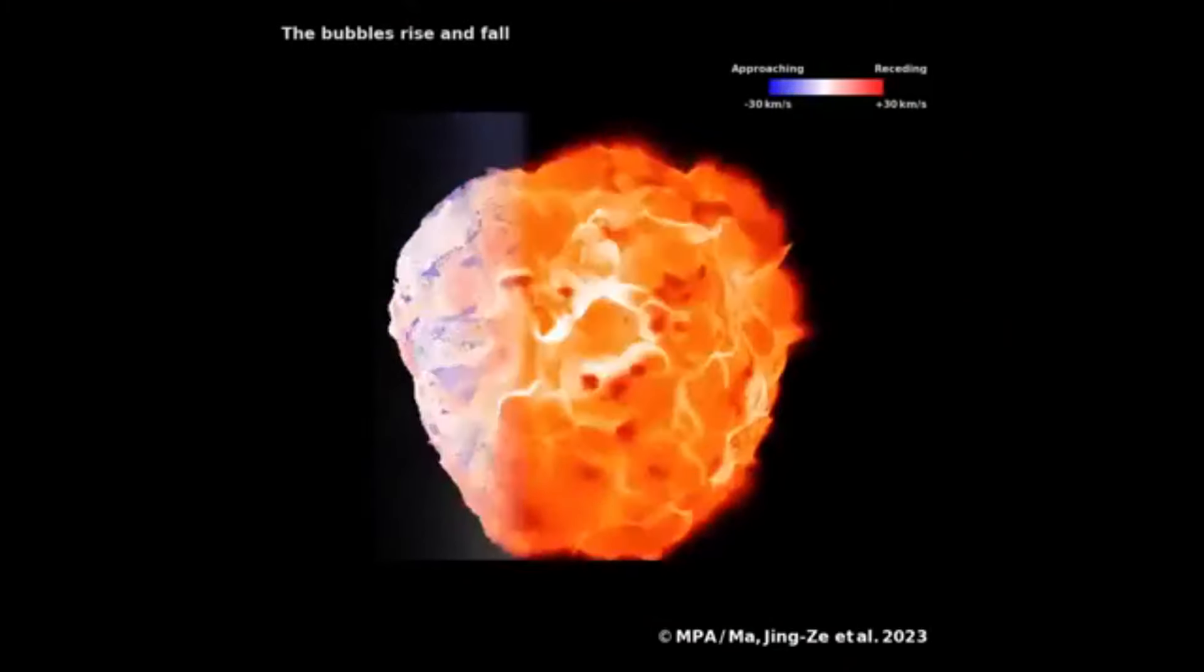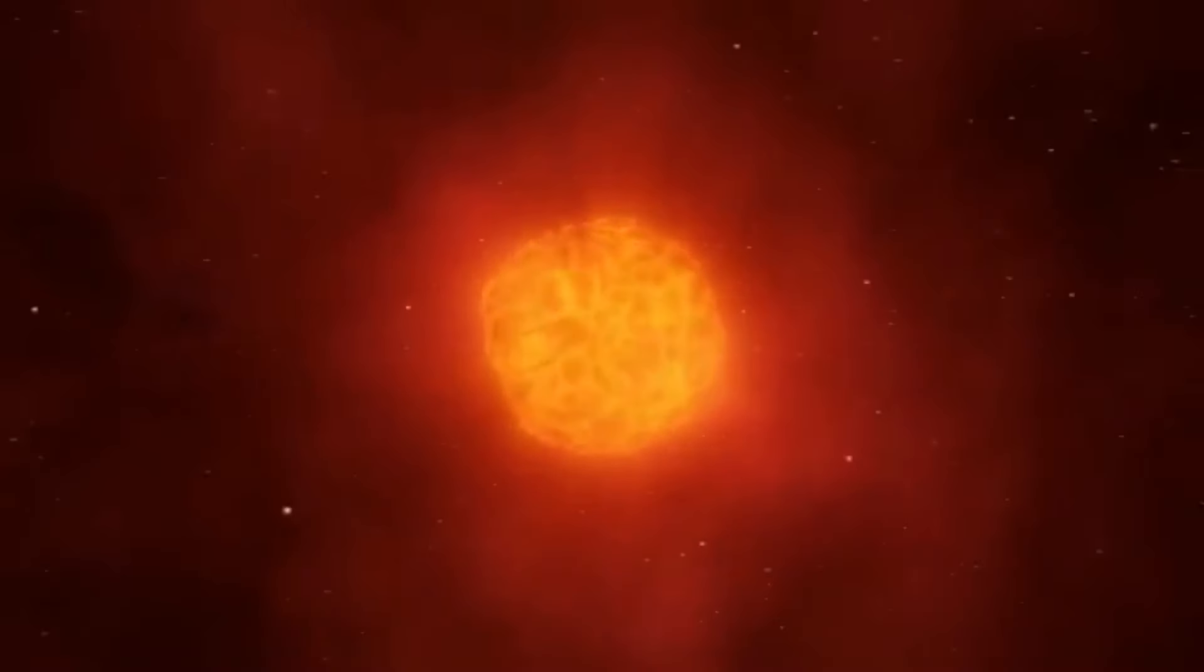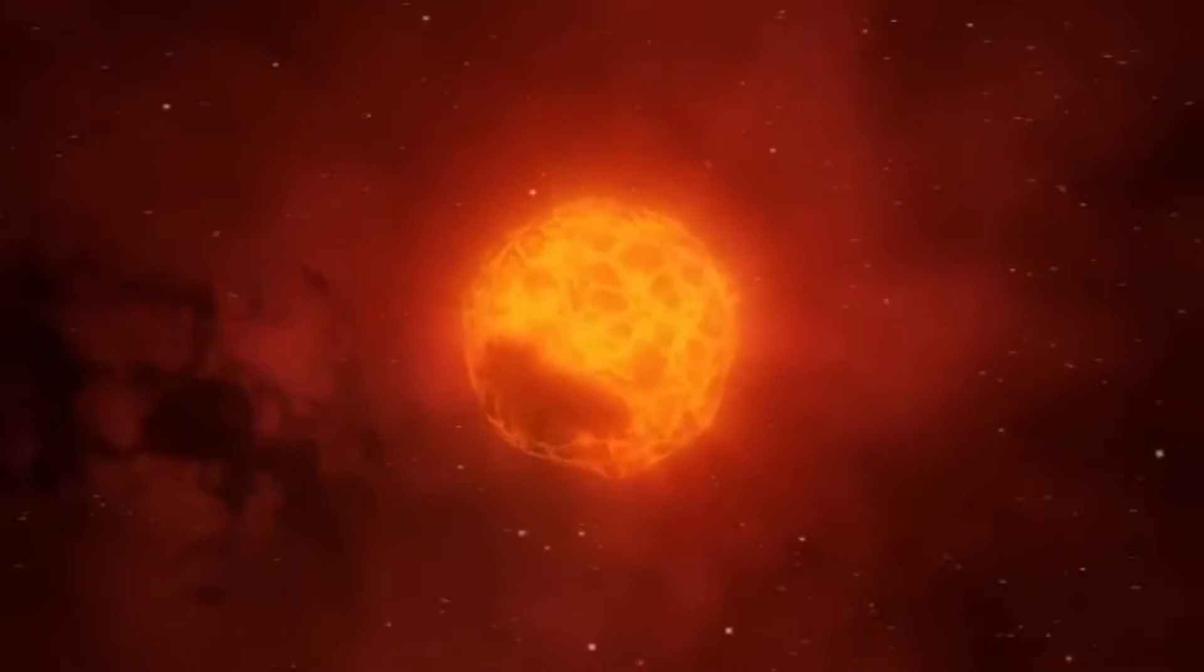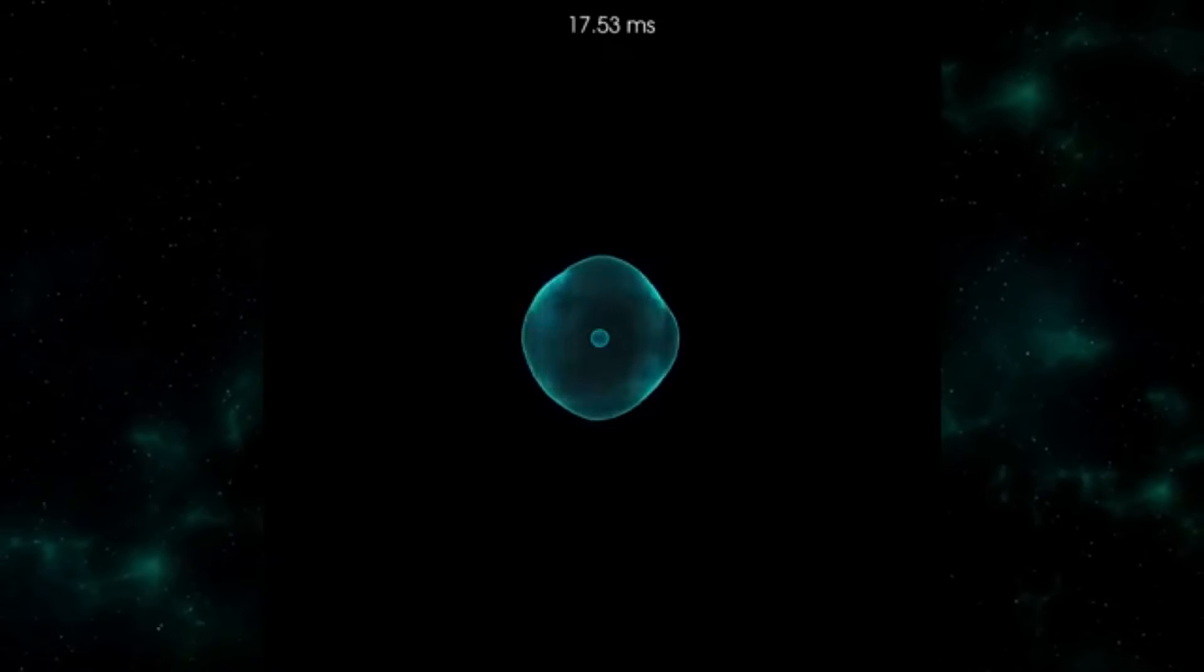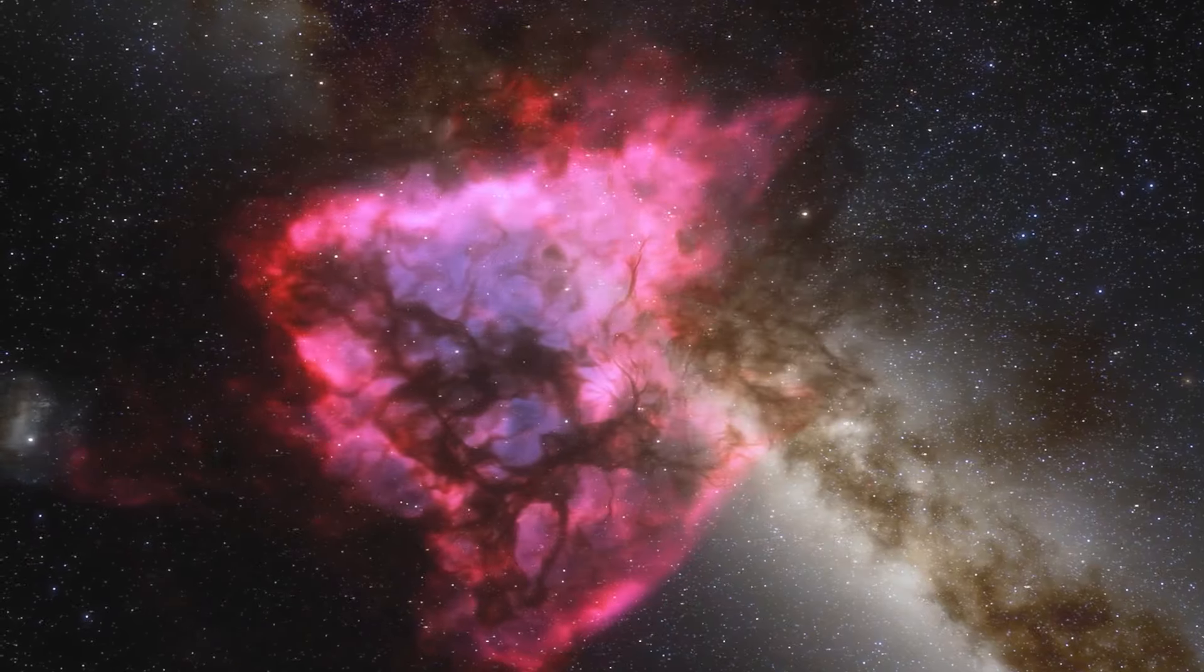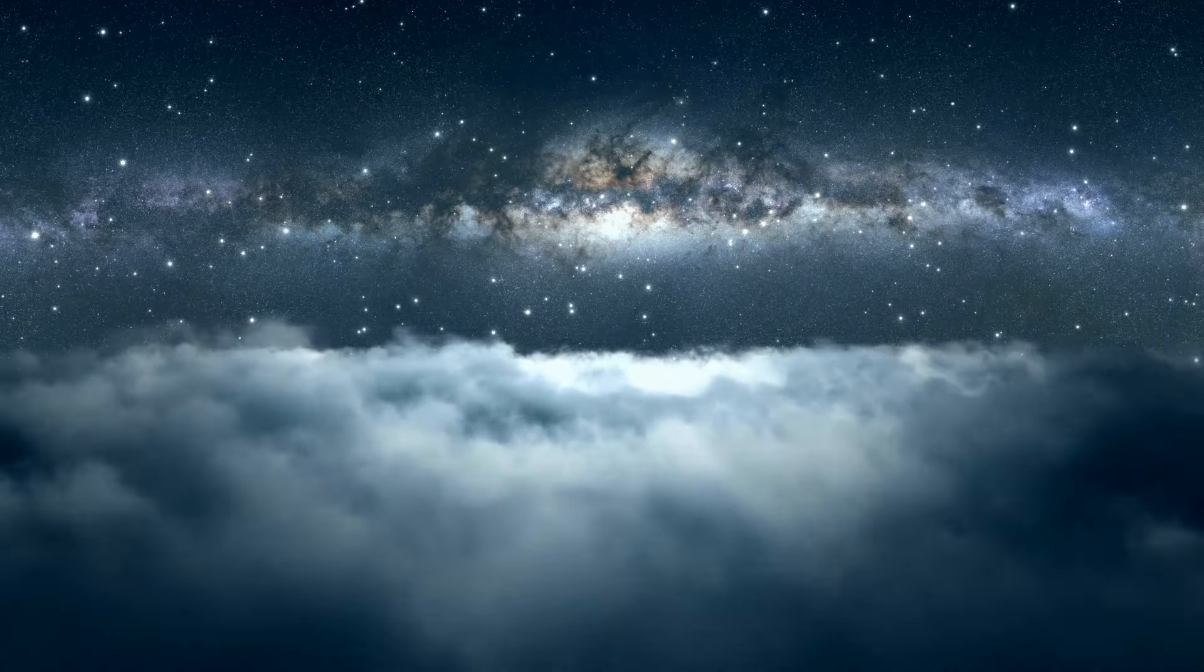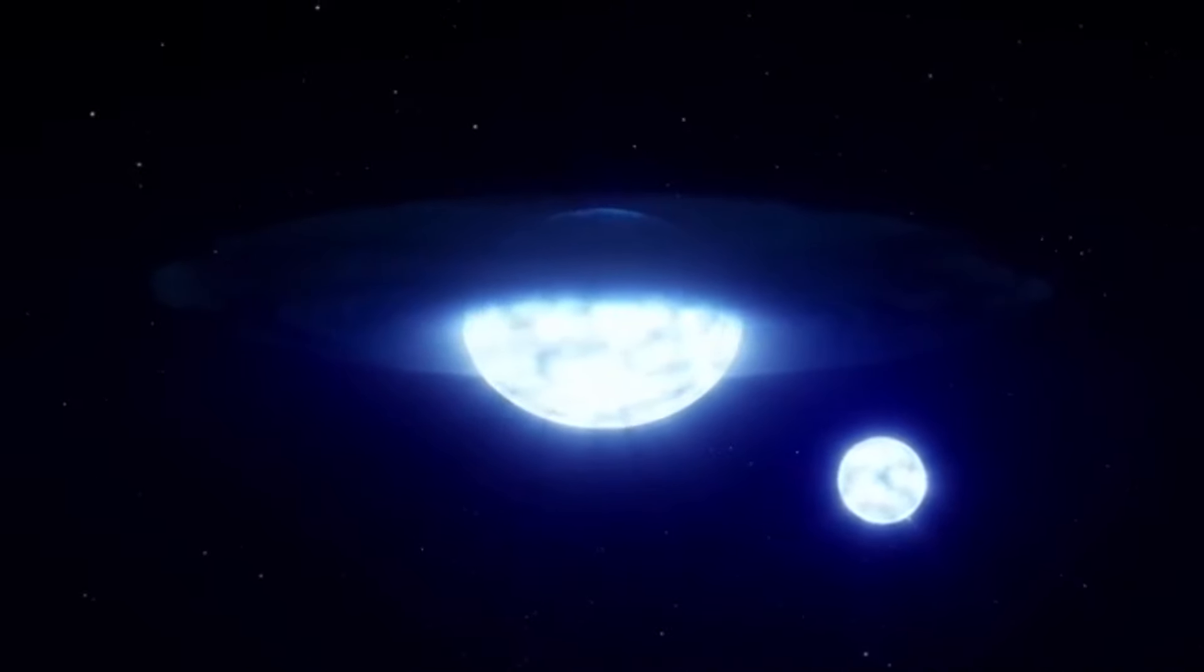When we compare Betelgeuse to our own sun, the differences become starkly evident. During this mass loss event, Betelgeuse's rate of mass loss was approximately 30 million times greater than that of the sun. Such a dramatic loss underscores the unique characteristics of red supergiants, particularly in their final stages. As the ejected plasma cools in the vastness of space, it can condense into enormous dust clouds. In this instance, the resulting dust cloud happened to lie directly in the line of sight between Earth and Betelgeuse, creating a visual obstruction that appeared as a substantial veil, darkening the star's brightness from our perspective.